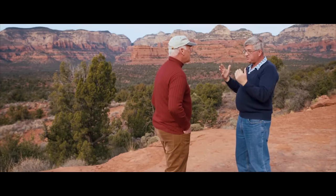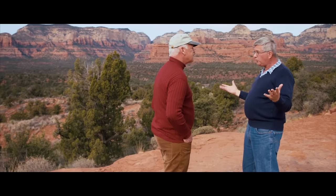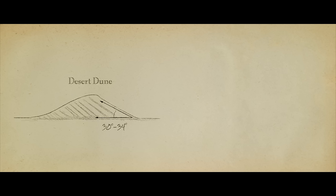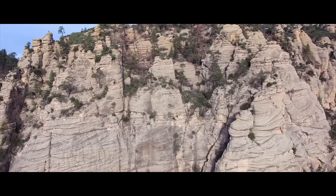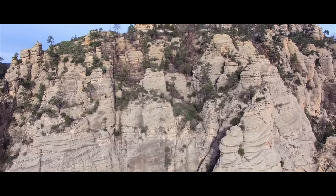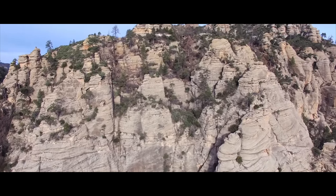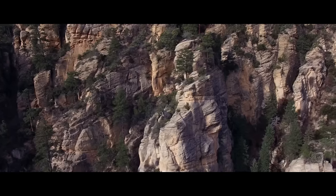We can estimate the depth of the water and the speed of the water current, and we can do this with the Coconino Sandstone. It's important to recognize there's a difference in the angle — in a desert dune it's usually 30 to 34 degrees of these sloping beds, whereas underwater it's usually 25 degrees or less. In the Coconino Sandstone, these crossbeds are always 15 to 25 degrees, so it was underwater deposition.